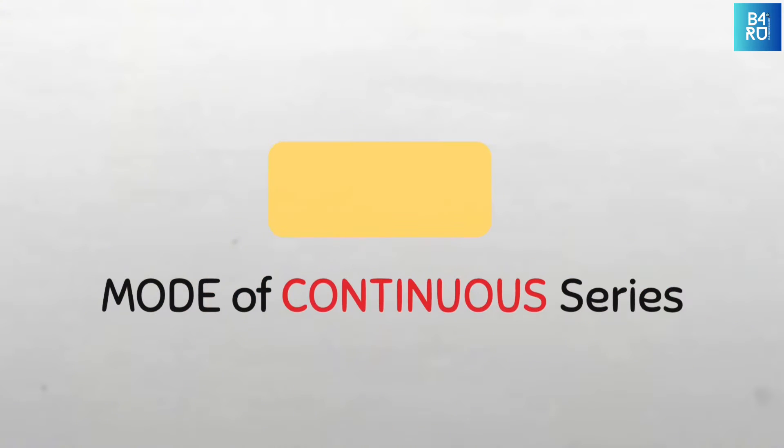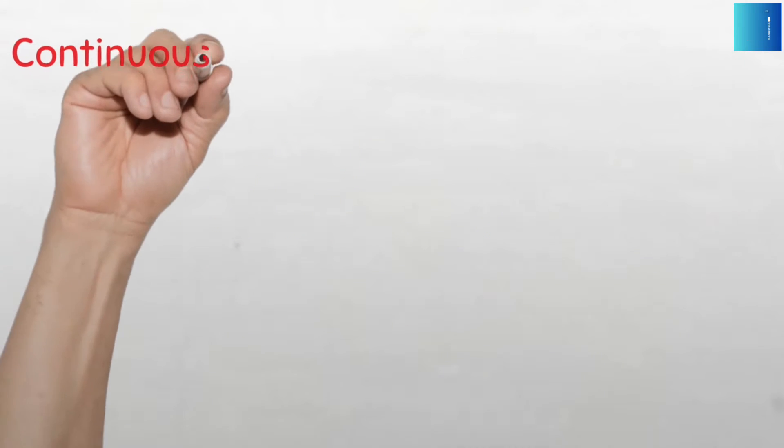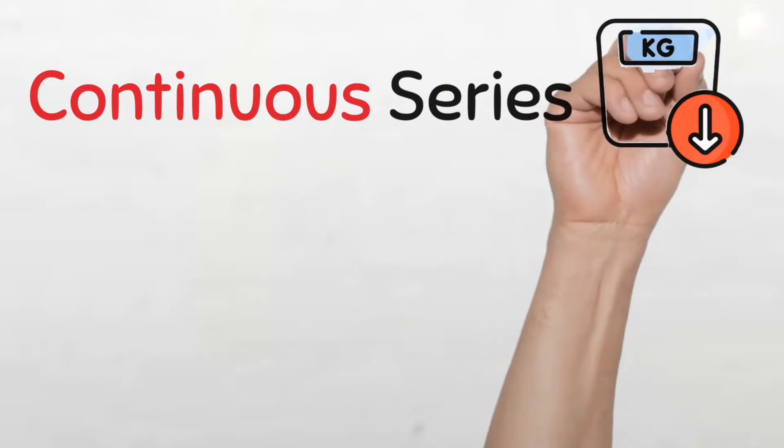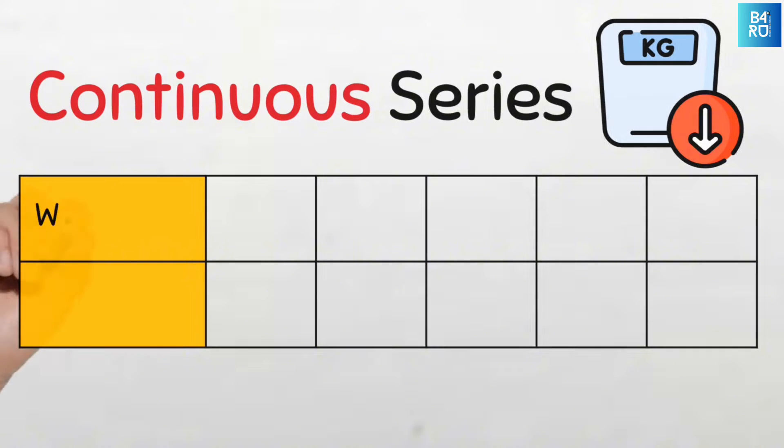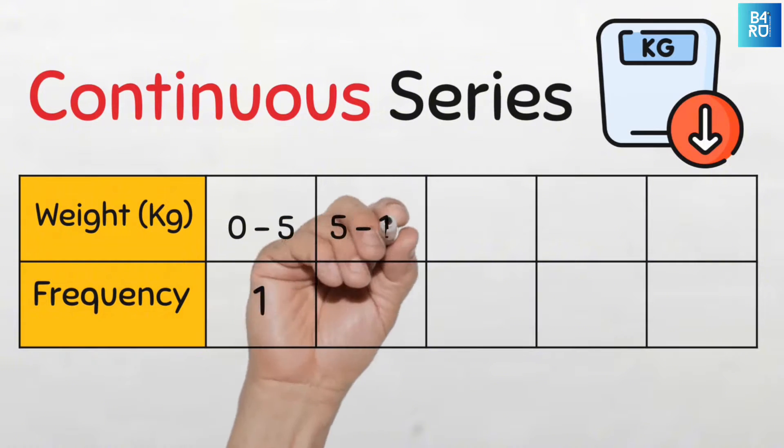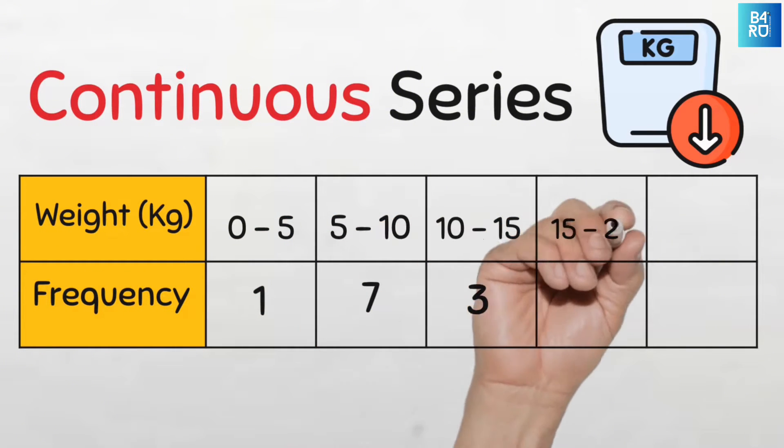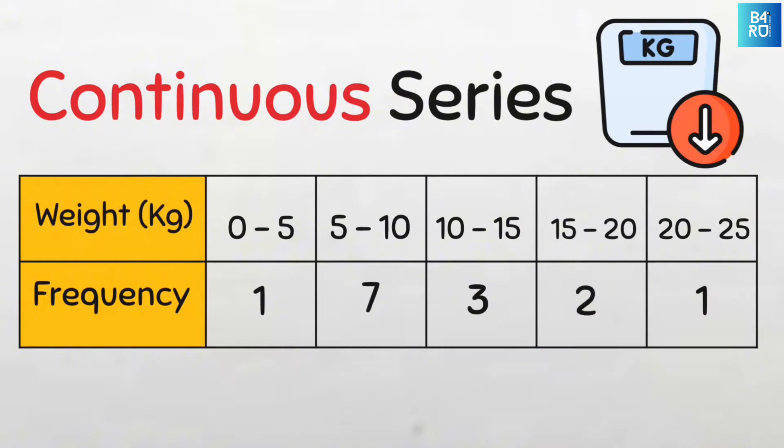Mode for continuous series data. This is a continuous series data on the weight in kilograms of 10 children attending the nutritional clinic in Samaru, Zaria, Nigeria. We know this to be a continuous series because we can see that the data is grouped and the frequency for each class is provided. So how do we find the mode of this type of data series?